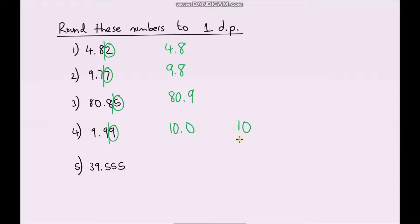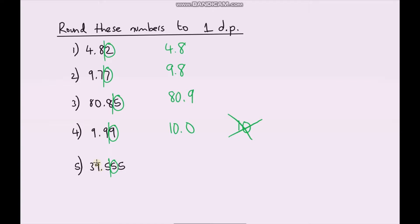Make sure you include the .0 and write 10.0 — don't just write 10 — because writing 10.0 states that you have rounded to one decimal place. For the last one, this is our first decimal place so put our line here. This number is exactly 5, so we round up and it becomes 39.6.